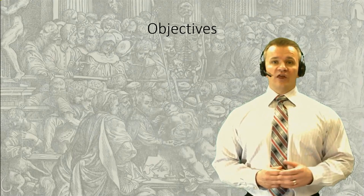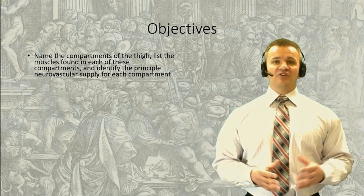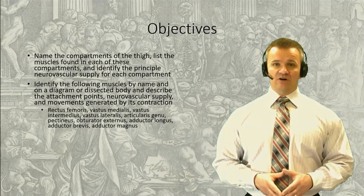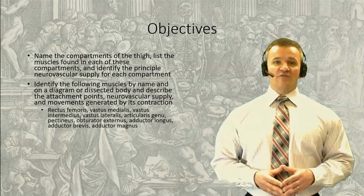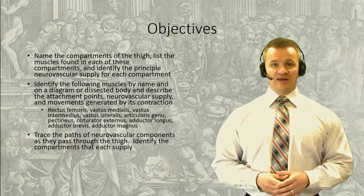In the previous class, we discussed the framework of the thigh by looking at the os coxae and the femur. This lesson builds onto that framework by looking specifically at the anterior and medial compartments of the thigh. The posterior compartment will be covered in the following lesson. We'll start with an overview of the three compartments and their properties, then discuss the muscles found in each, and finish with a look at the neurovascular supply to the anterior and medial compartments.